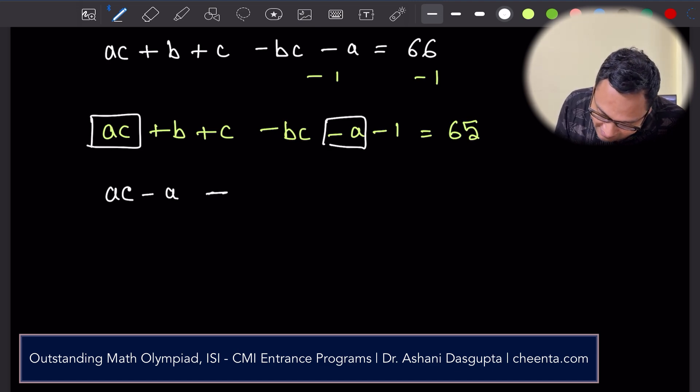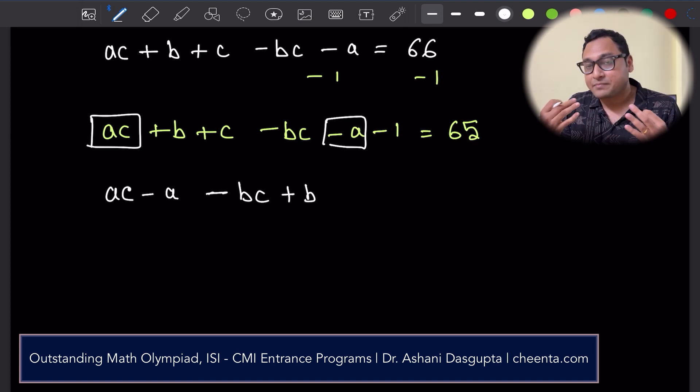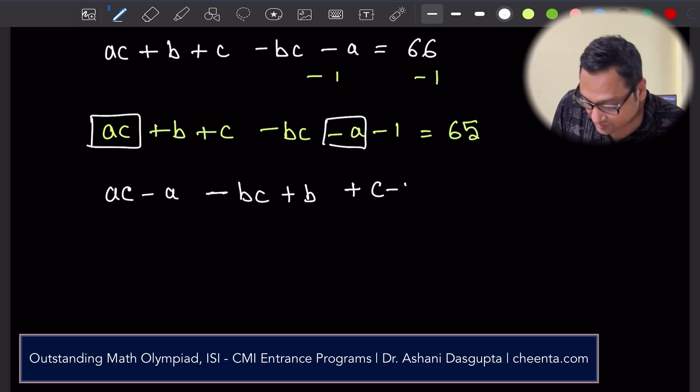Minus bc plus b, so again I can take minus b common, and again I'll get c minus one, plus c minus one is equal to 65.